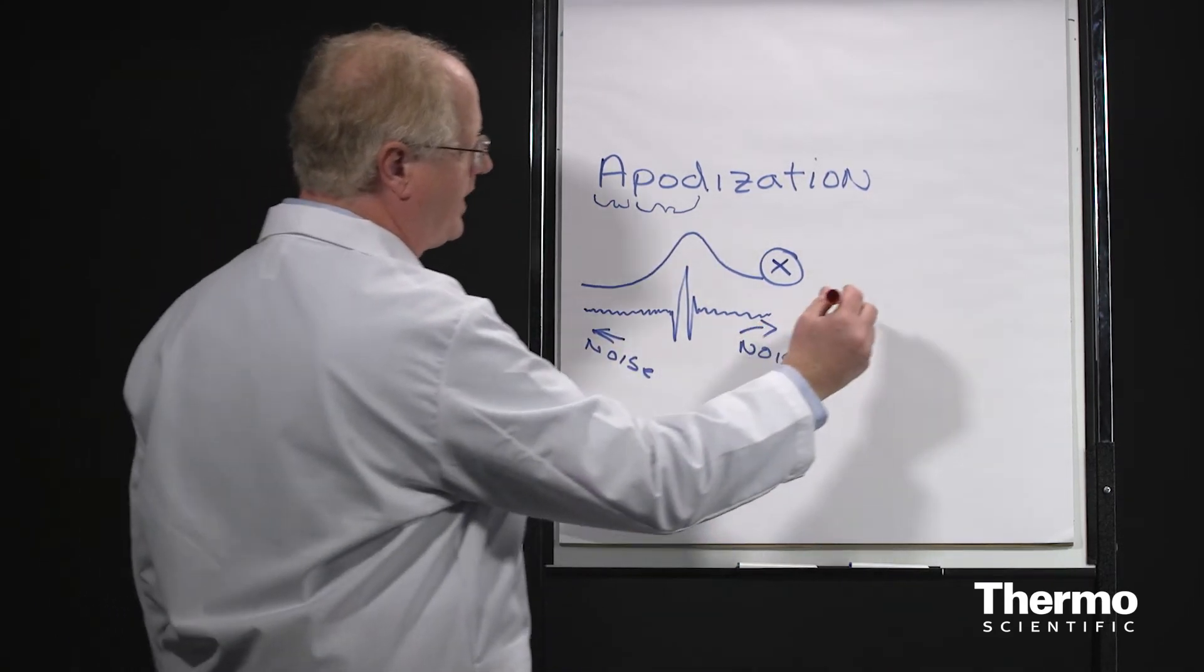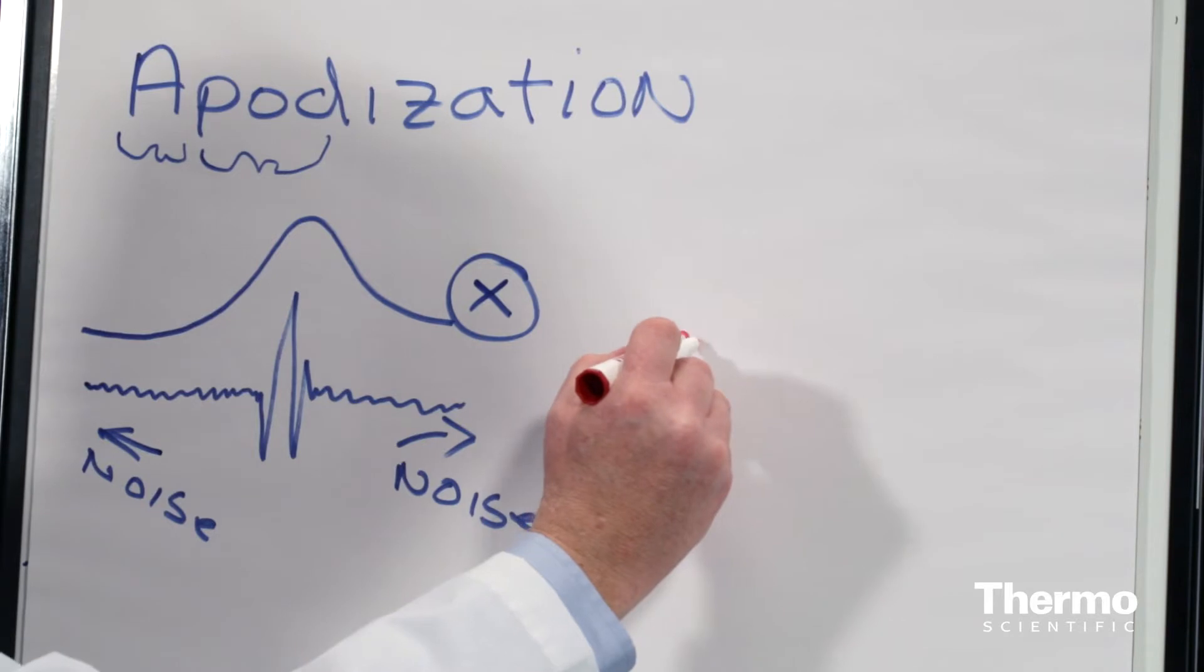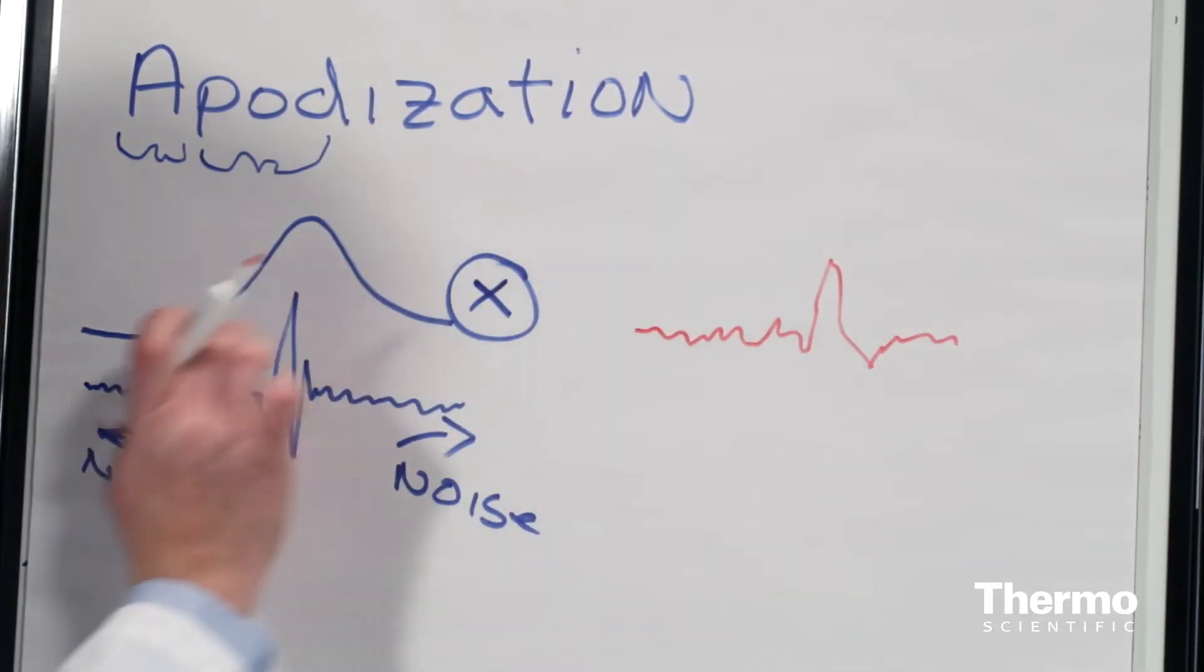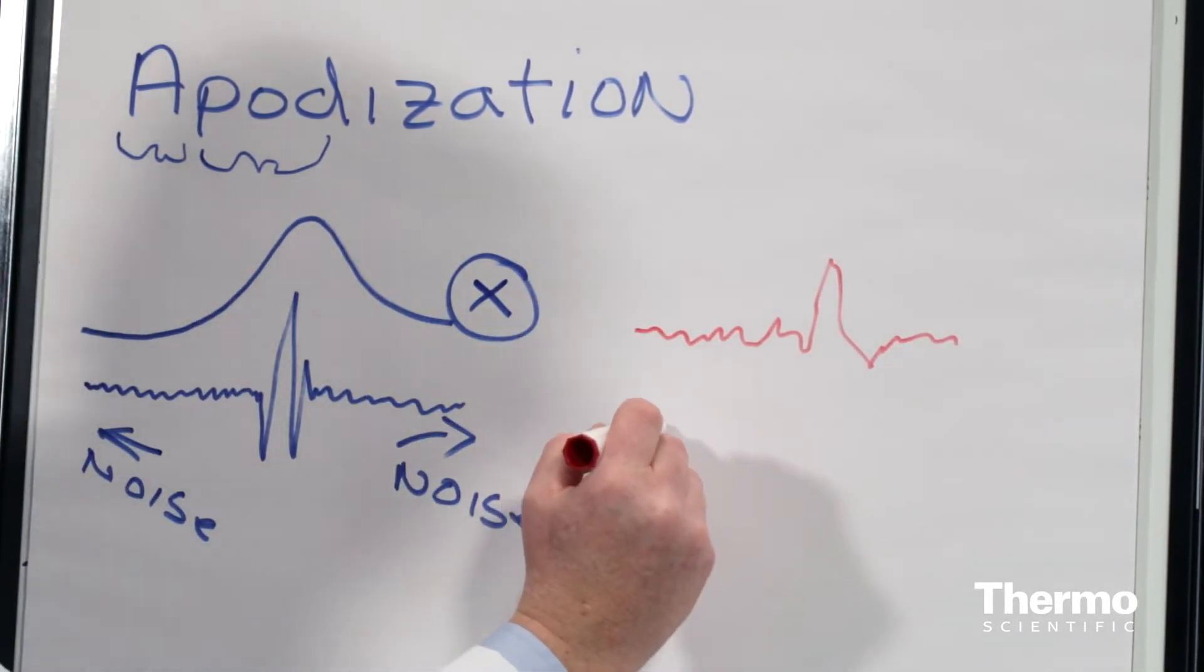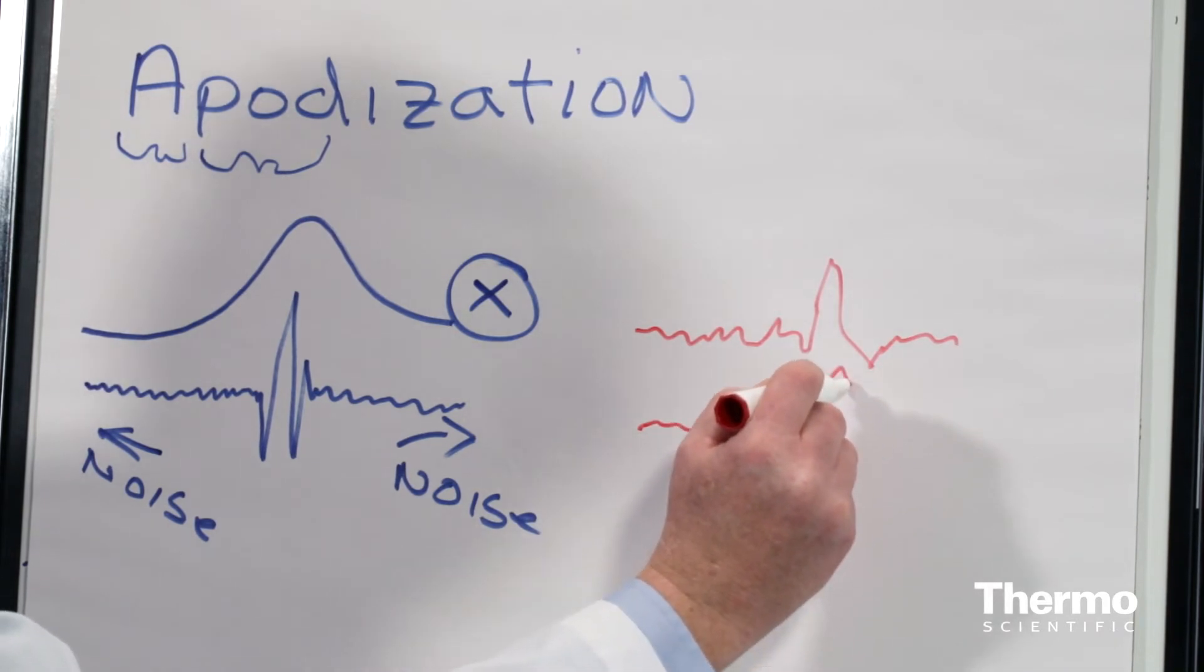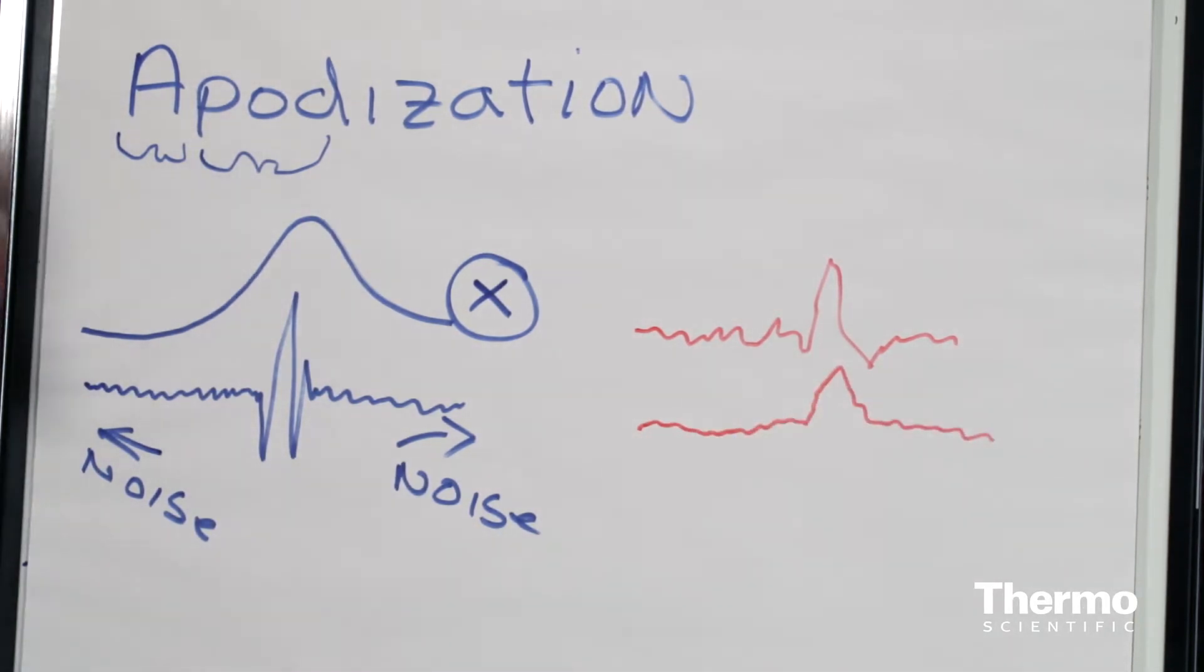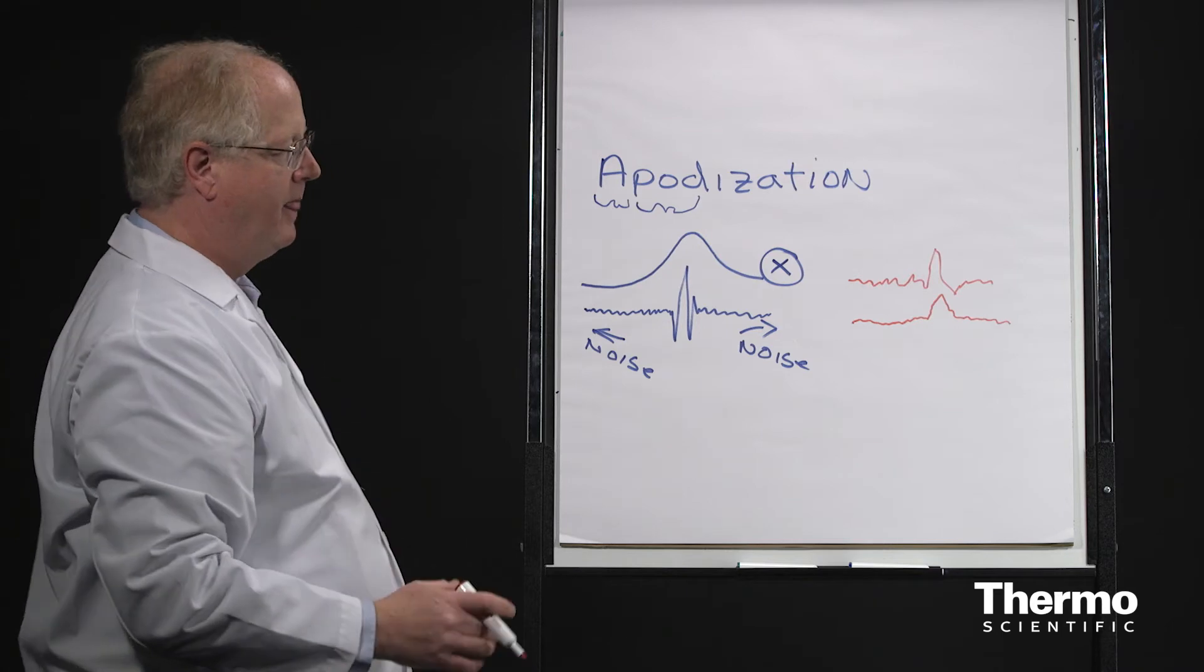So if you were to look at the infrared spectrum, you might have noise in one case, and then when you apply an apodization function, the noise would decrease. The peak would still be there, but the noise would decrease.